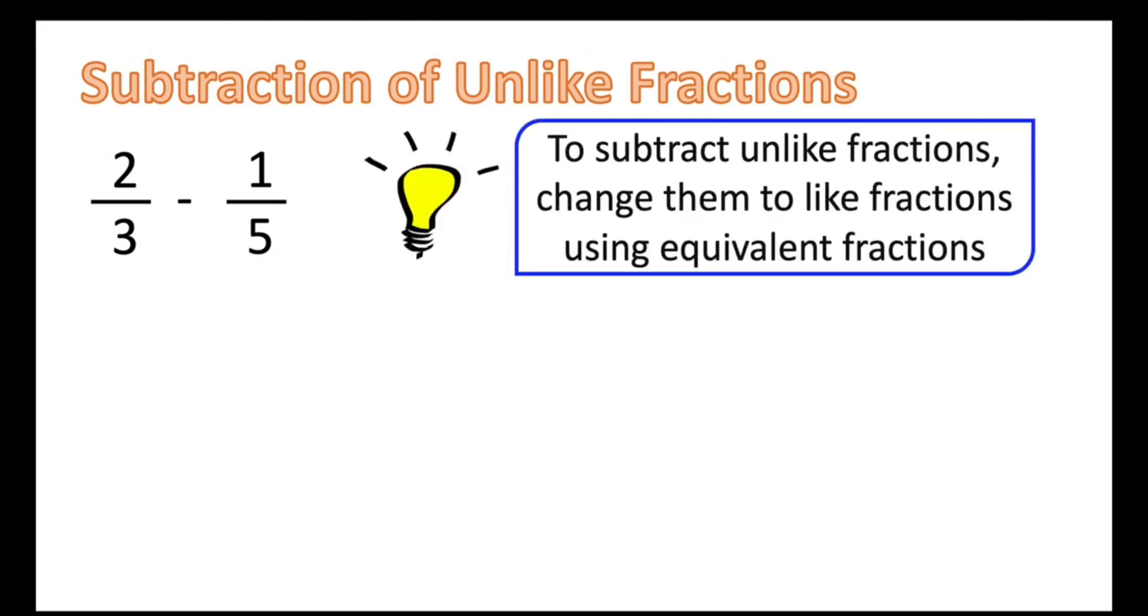Let's subtract unlike fractions. So we have here 2 thirds minus 1 fifth. As you can see, the denominators are different. Here's the rule: to subtract unlike fractions, change them to like fractions using equivalent fractions.